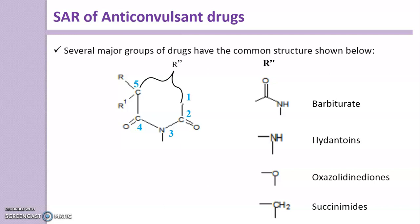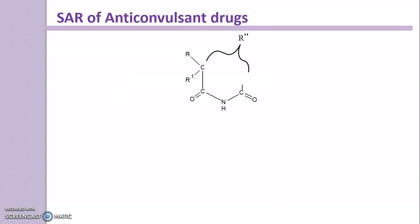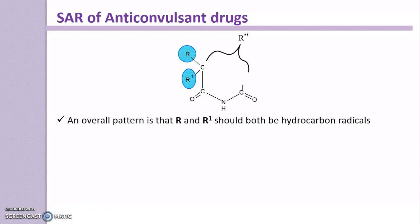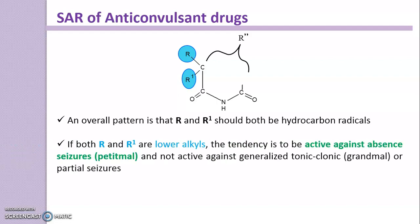One common feature across all these major groups is the substitution at carbon-5, that is R and R1. The overall pattern is that R and R' should both be hydrocarbon radicals, containing only carbon and hydrogen. If both R and R' are lower alkyl substituents, the compound tends to be active against absence seizures (petit mal epilepsy) and is not active against generalized tonic-clonic (grand mal) or partial seizures.